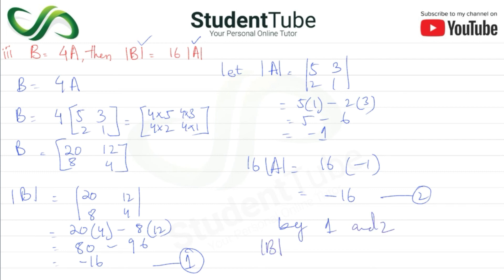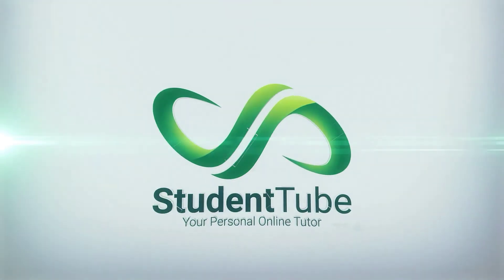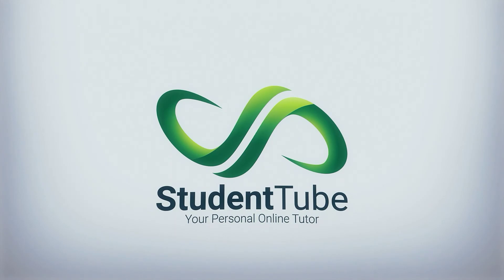Therefore, det(B) = 16 × det(A). Proved. This was the question — I hope you understood it well. For more exercises and questions, please subscribe to the channel and share with at least 10 friends in your class. See you in the next video. Allah Hafiz.